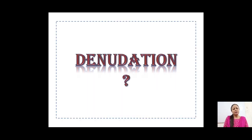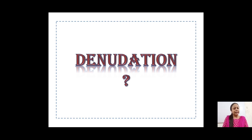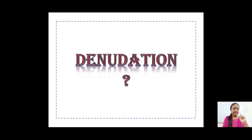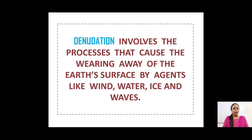Now let us learn a few more terms related to weathering. The next term is denudation. Denudation involves the processes that cause the wearing away of the earth's surface by agents like wind, water, ice, and waves.